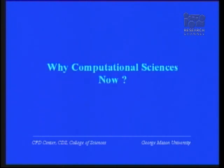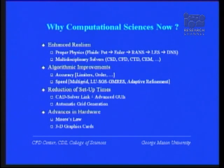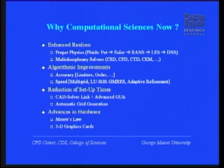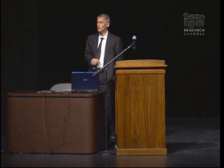So why computational sciences now — the fourth alternative? First, we can do a lot more because we have learned how to solve the proper physics and how to couple physics from different fields. Second, we have improved algorithms drastically, reduced setup times, and there are continuing advances in hardware.